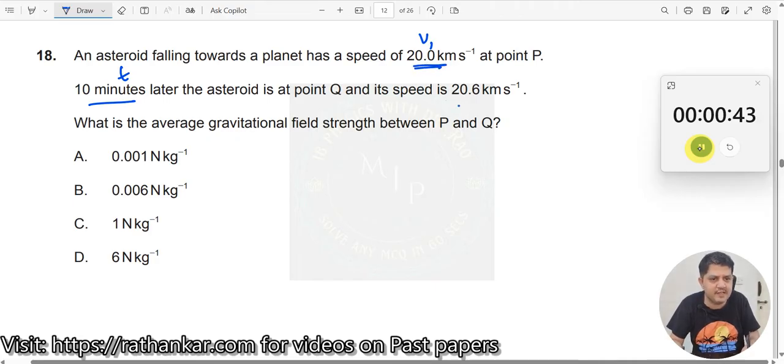What has happened? 20 km per second, 20.6 km per second, which means what? The speed has increased, right?